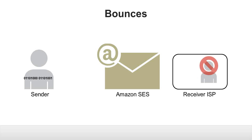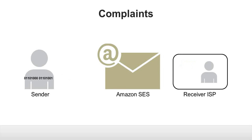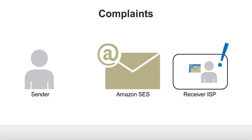If the recipient's email address doesn't exist, the ISP sends a bounce notification to Amazon SES, which then forwards the notification to the sender. If a recipient does not want to receive the message, they can register a complaint with the ISP by clicking their spam button. The ISP sends the complaint to Amazon SES, which then forwards it to the sender.